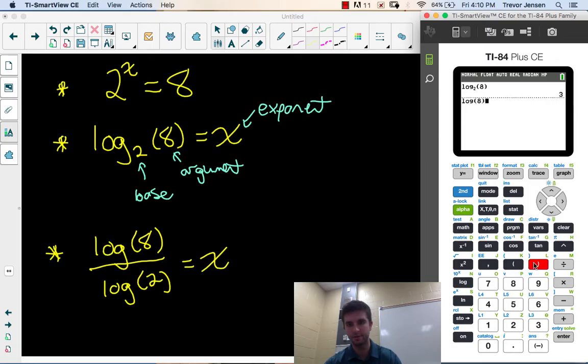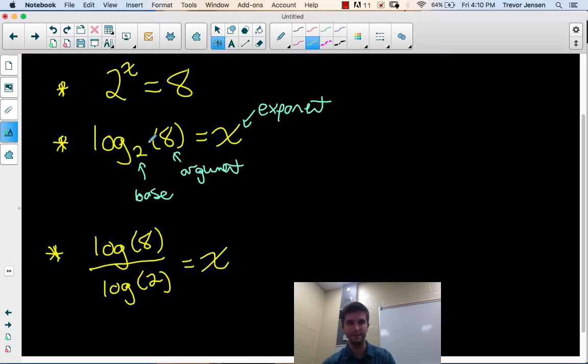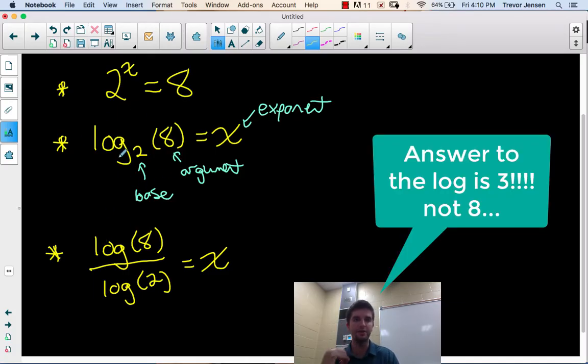Log 8 divided by log 2. Same answer of 3. That's the exponent I would put on 2 to get the argument of 8. 2 cubed equals 8. That's why the answer to this log is 8. Now I should point out here,